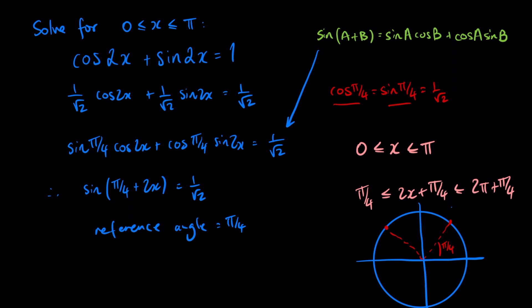This angle to the second point there is 3π on 4. In this domain we're going to have three solutions: the first point at π on 4, the second point at 3π on 4.